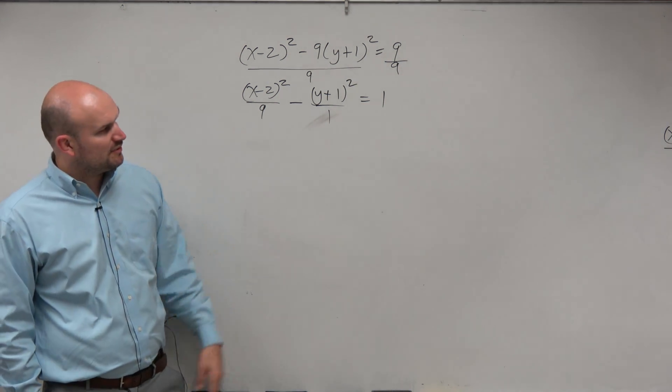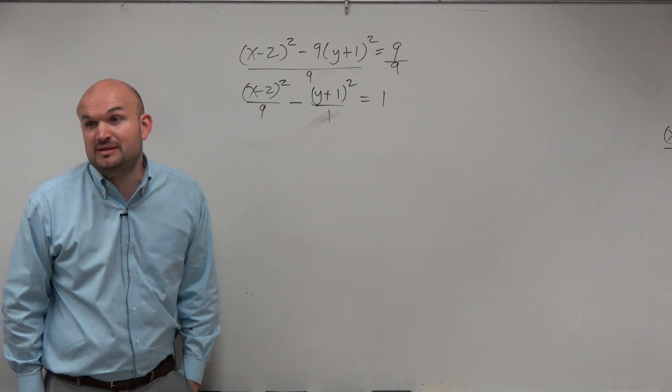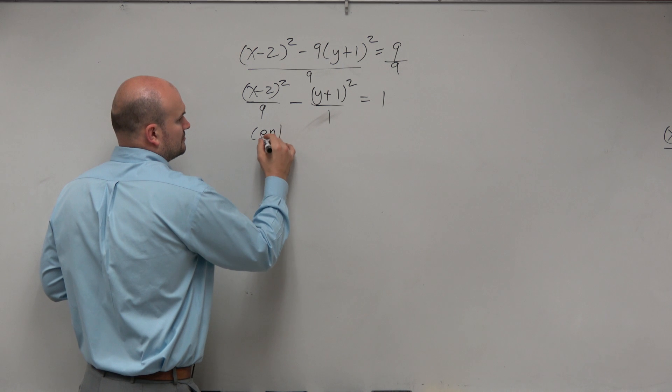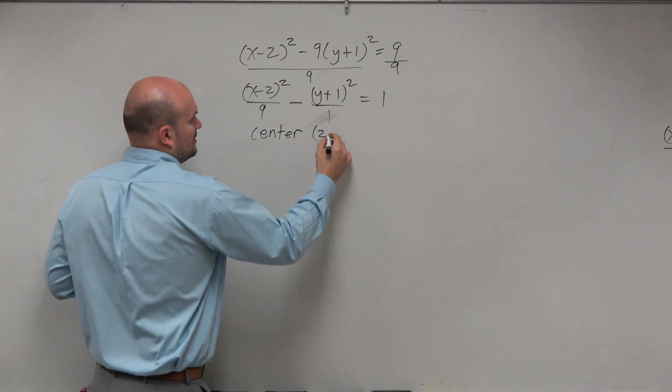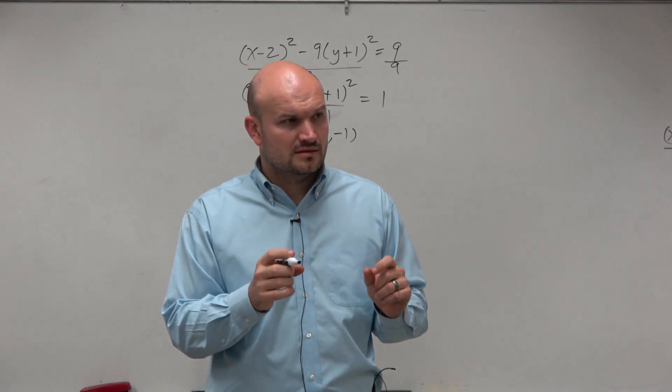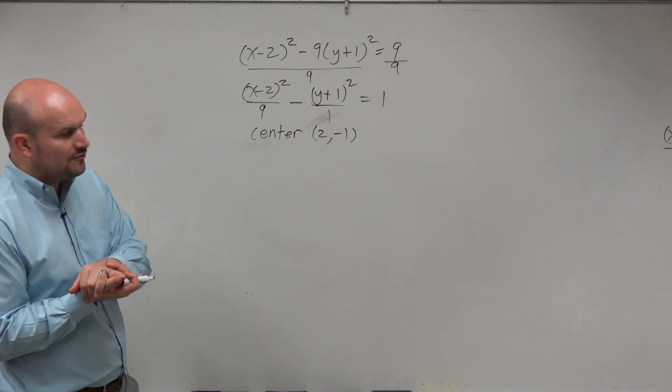But you can divide it by 1, and that'd be perfectly fine. So now, let's go ahead and identify our center, because that should be the easiest, right? Our center is always going to be h and k. So 2 and -1. So the center is (2, -1).